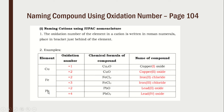For iron (Fe), we have Fe²⁺ and Fe³⁺. Iron(II) chloride FeCl₂ comes from crossing Fe²⁺ with Cl⁻. Iron(III) chloride FeCl₃ comes from crossing Fe³⁺ with Cl⁻. For lead (Pb), we have Pb²⁺ and Pb⁴⁺. Lead(II) oxide PbO comes from crossing Pb²⁺ with O²⁻, and lead(IV) oxide PbO₂ comes from crossing Pb⁴⁺ with O²⁻.